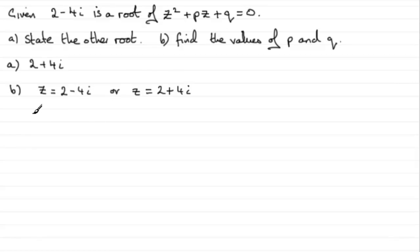then this must have come from the fact that z minus 2 minus 4i, multiplied by z minus this value, put that in brackets, must have equaled 0.